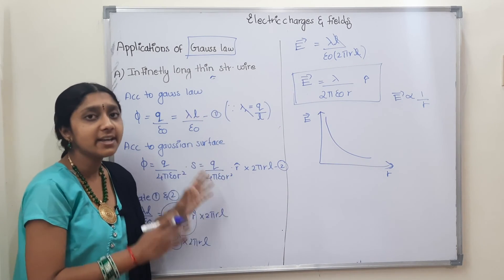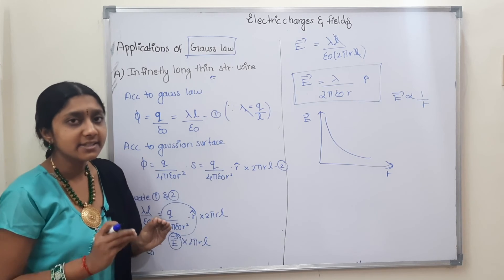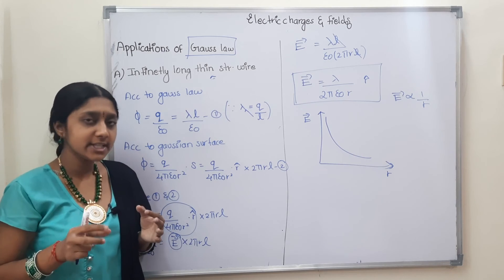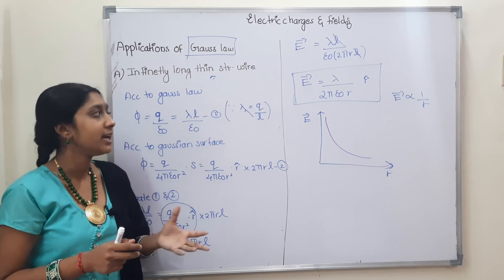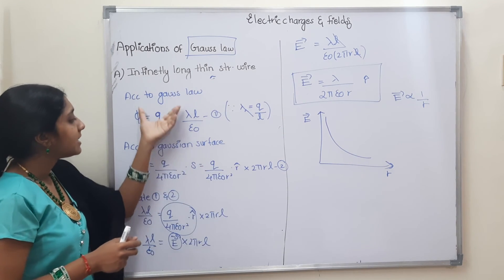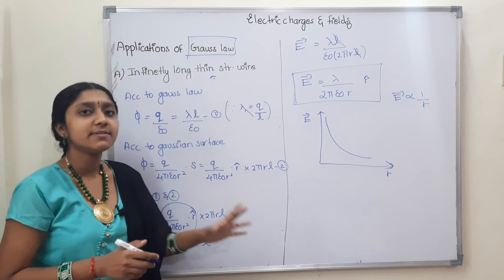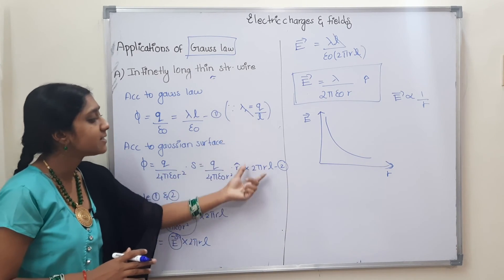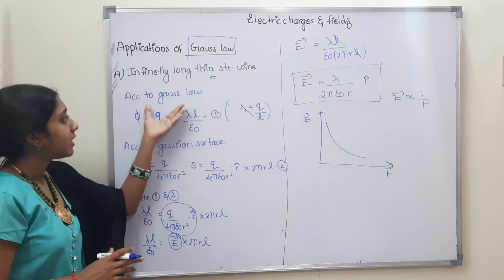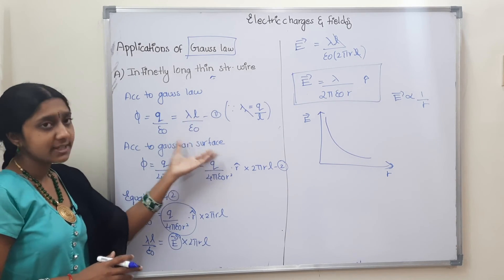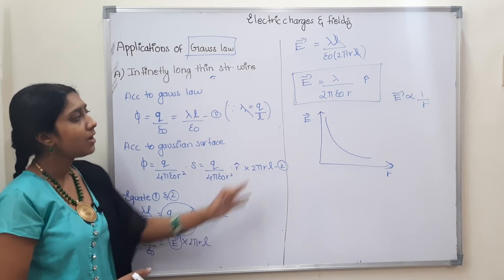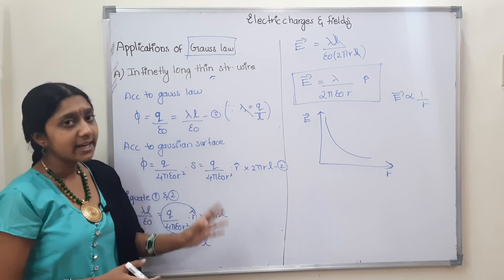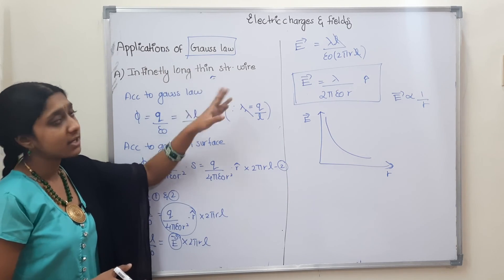This is the entire derivation — it is very easy. We start with the diagram and statement, then calculate the flux and apply the Gaussian surface. According to Gauss's law, we equate the expressions and derive the electric field formula, from which we can also draw the graph.